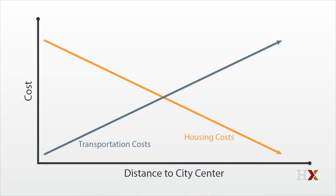And if commuting gets more difficult — so the cost of transport slopes up more sharply — then housing costs will fall down more sharply. You can see that as the transport costs pivot up, the housing cost curve pivots down.